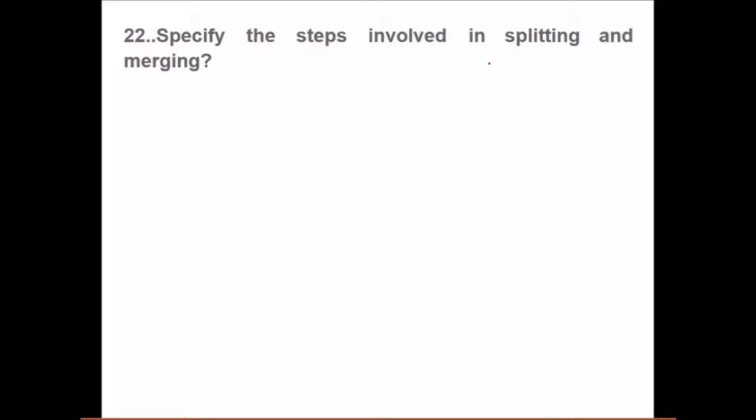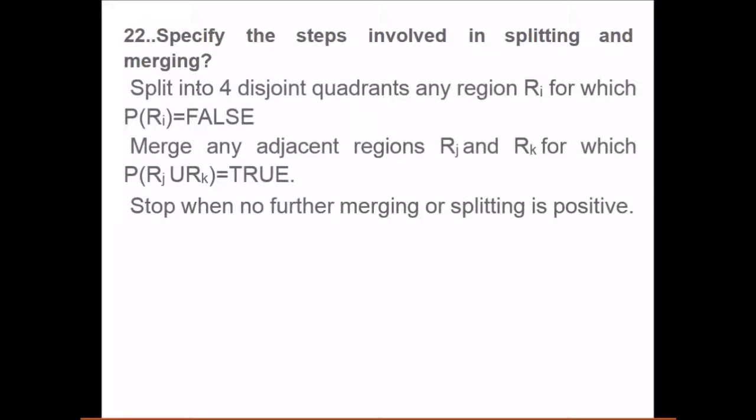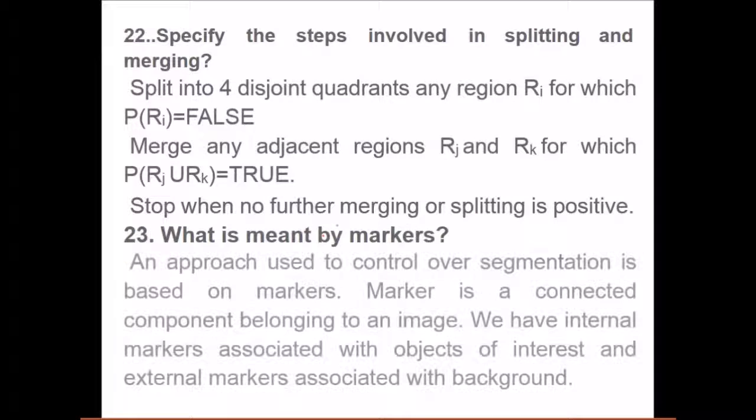Specify the steps involved in splitting and merging. Split into four disjoint quadrants any region R for which the criteria is false. Merge any adjacent regions or any two regions for which this union is true. Stop when no further merging or splitting is possible. What happens here is we split, and when we split, we see if what we have split has some common property. Those split parts can be combined again and merged. This is splitting and merging.